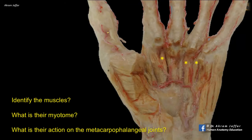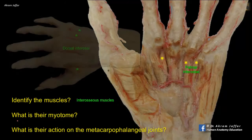Now, identify the muscles, what is their myotome, and what is their action on the metacarpophalangeal joints. These are interosseous muscles. As their name indicates, they are located between bones — that is to say, the metacarpals. They are arranged in two layers, palmar and dorsal interossei.